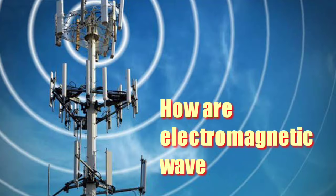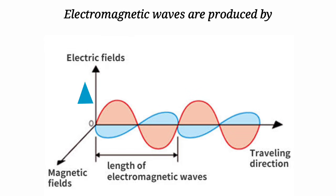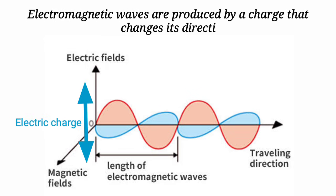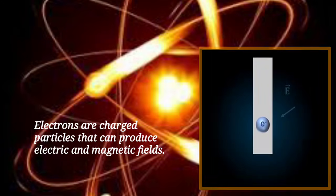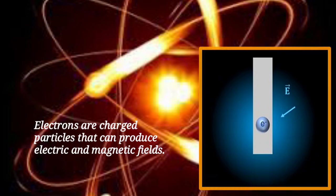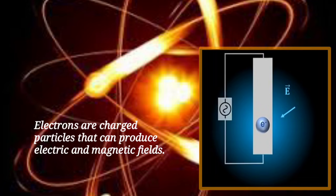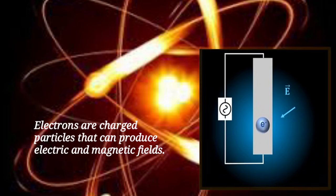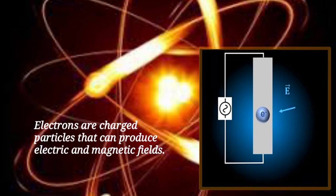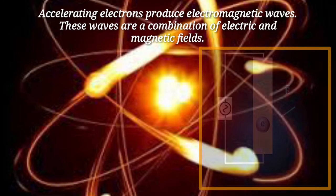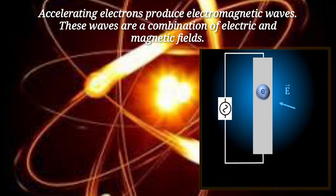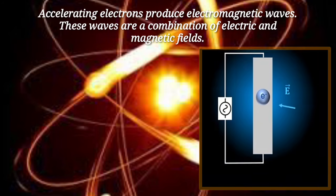Now, how are electromagnetic waves produced? Electromagnetic waves are produced by a charge that changes its direction or speed. Remember that electrons are charged particles that can produce electric and magnetic fields. But in order to create the vibrating electric and magnetic fields that are the characteristics of an electromagnetic wave, electrons must move. Accelerating electrons produce electromagnetic waves. These waves are a combination of electric and magnetic fields.